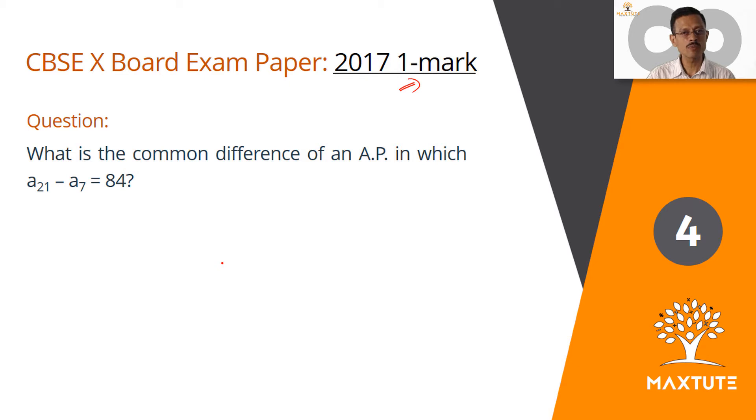They've given us data saying that the difference between the 21st and the 7th term of this arithmetic progression is 84. What we need to find out is the common difference of this progression.